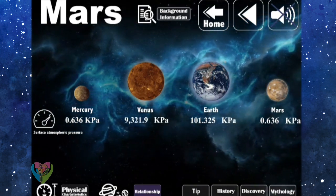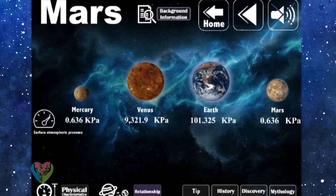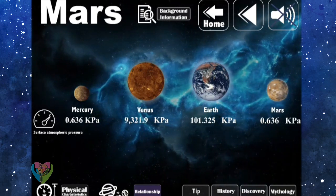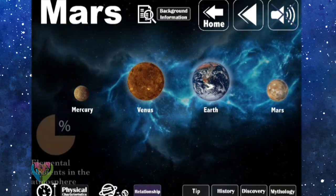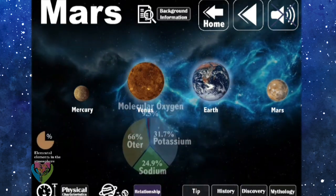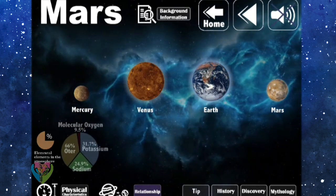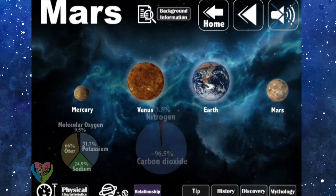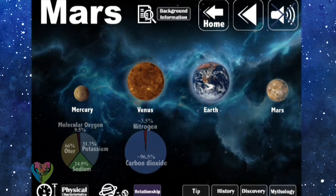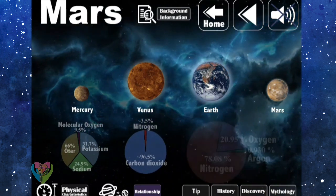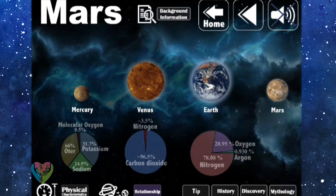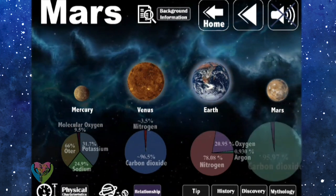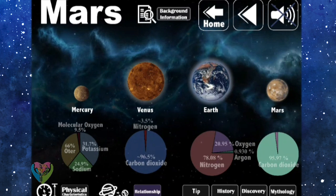Surface atmospheric pressure: Mercury, 0.636 kilopascals; Venus, 9,321.9 kilopascals; Earth, 101.325 kilopascals; Mars, 0.636 kilopascals. Elemental elements in the atmosphere: Mercury - 31.7% potassium, 24.9% sodium, 9.5% molecular oxygen, 66% argon. Venus - around 96.5% carbon dioxide, around 3.5% nitrogen. Earth - 78.08% nitrogen, 20.95% oxygen, 0.93% argon.